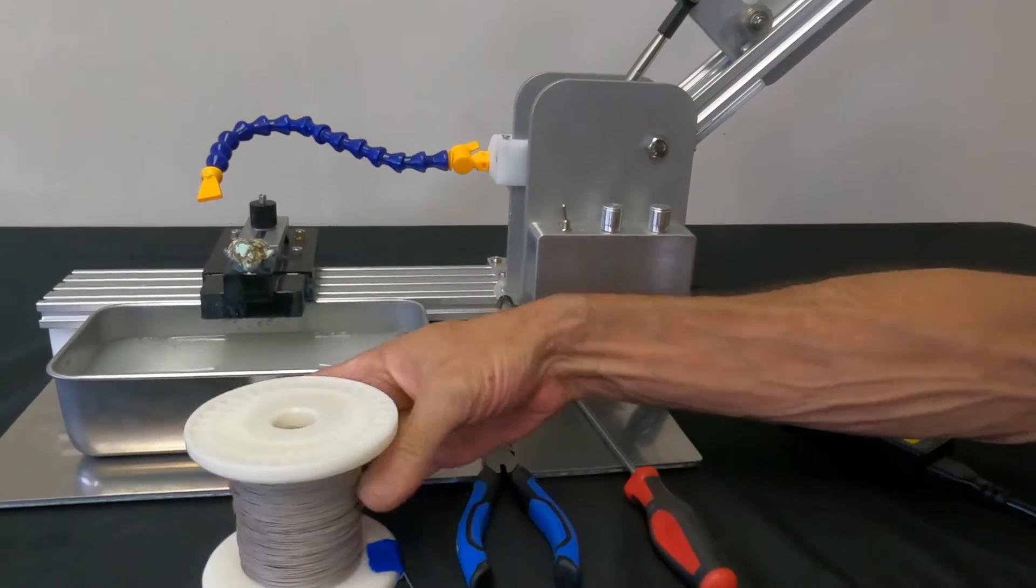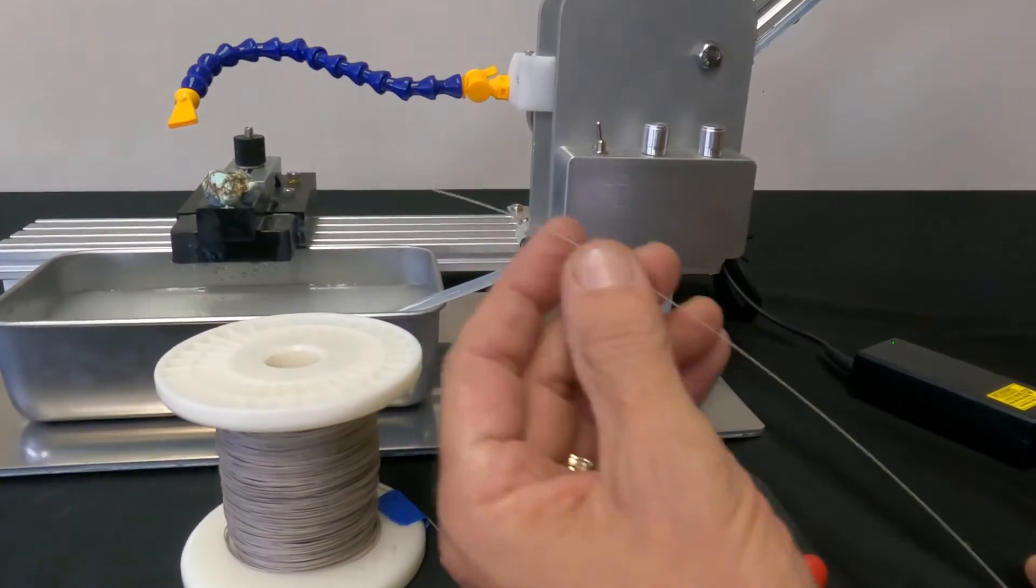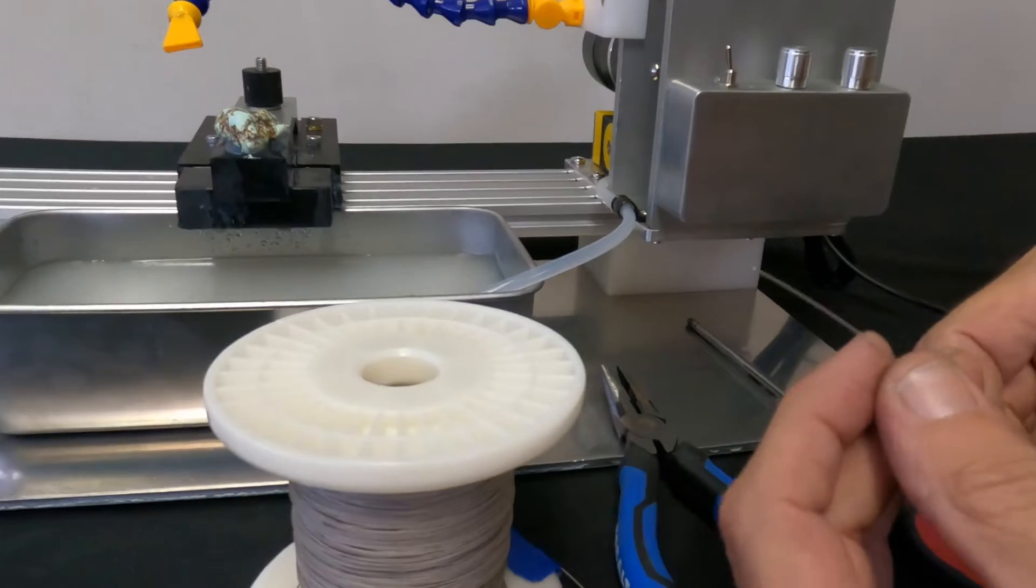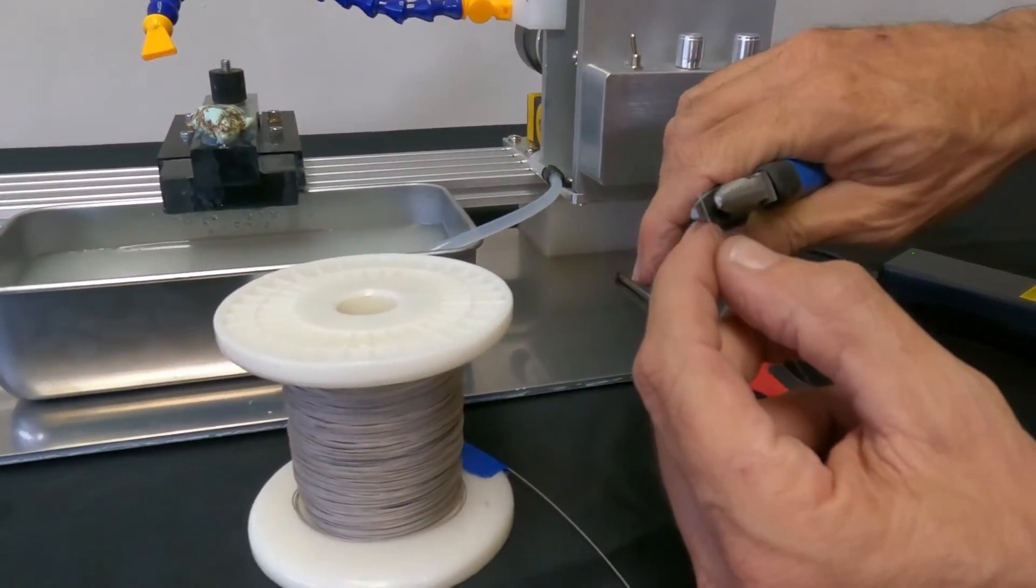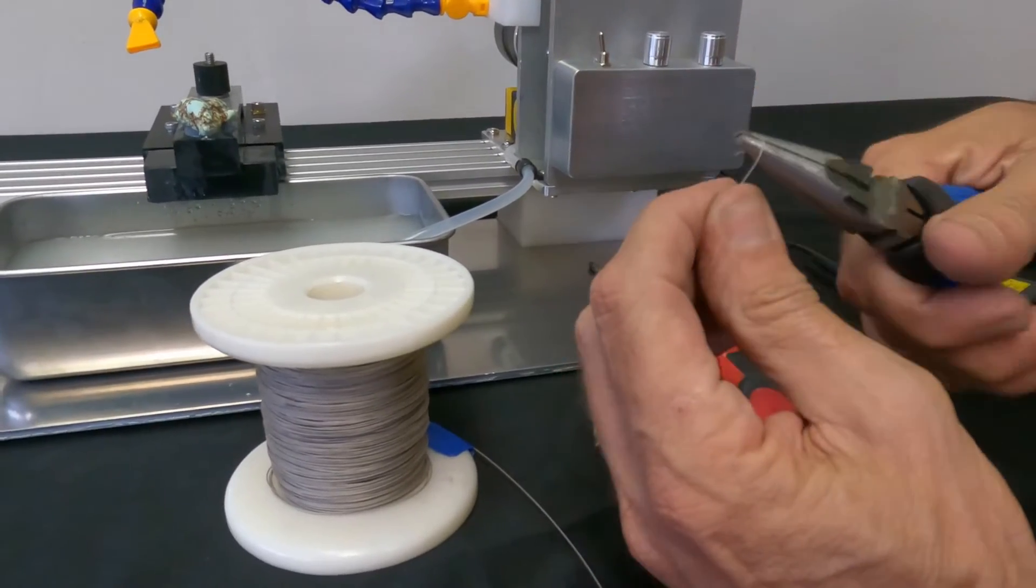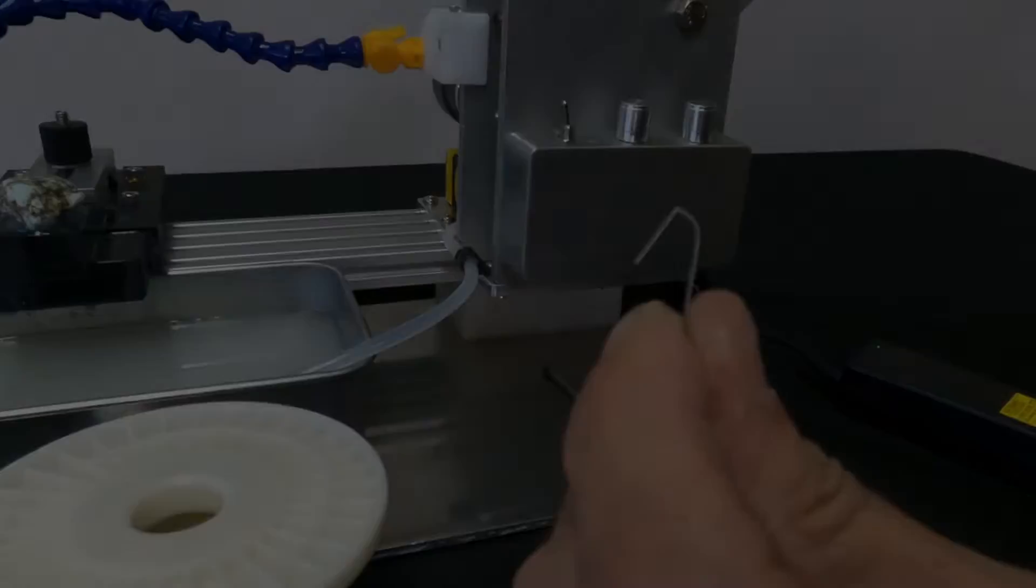Diamond wire used for the saw ships on spools like this. Typically 50 to 100 yards of wire is on a spool, and it is one continuous strand. To start restringing the bow, put a hook in the end of the wire.